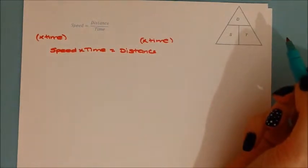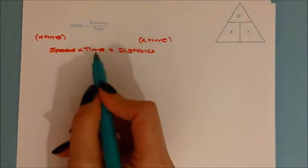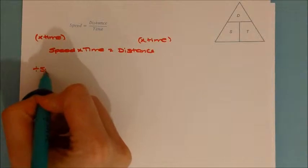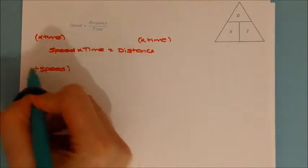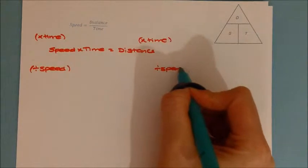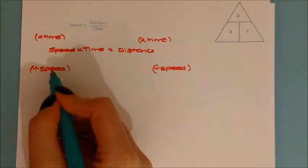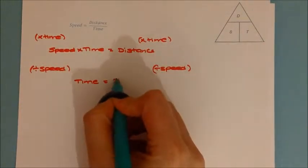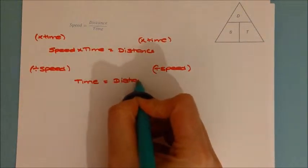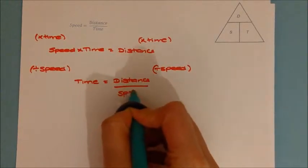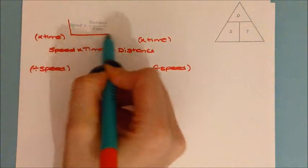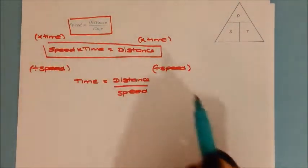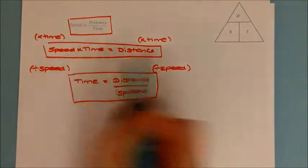The third rearrangement is if you want to get time on its own. Time has been multiplied by speed, so to get it on its own you divide by speed. Dividing both sides by speed cancels it out, leaving time equals distance divided by speed. So the three rearrangements are: speed equals distance divided by time; speed times time equals distance; and time equals distance divided by speed.